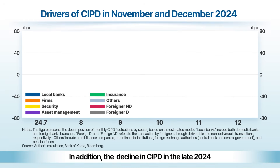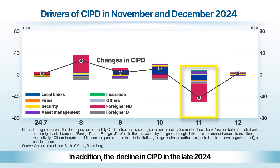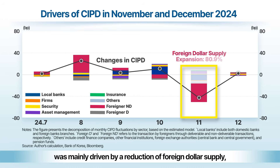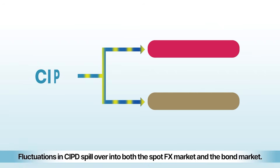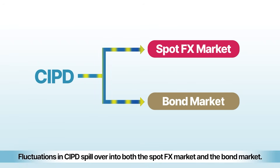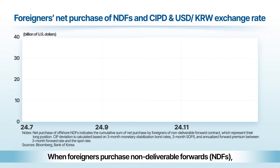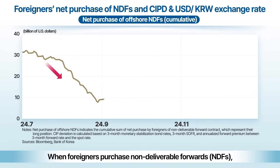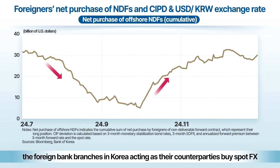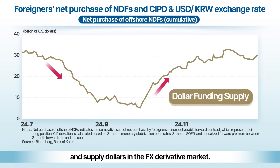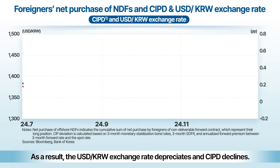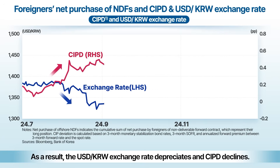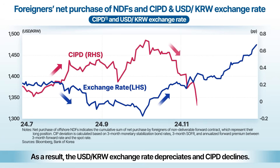In addition, the decline in CIPD in late 2024 was mainly driven by a reduction of foreign dollar supply, which accounted for about 81% of the change. Fluctuations in CIPD spill over into both the spot FX market and the bond market. When foreigners purchase non-deliverable forwards (NDFs), the foreign bank branches in Korea acting as their counterparties buy spot FX and supply dollars in the FX derivative market. As a result, the USD-KRW exchange rate depreciates and CIPD declines.